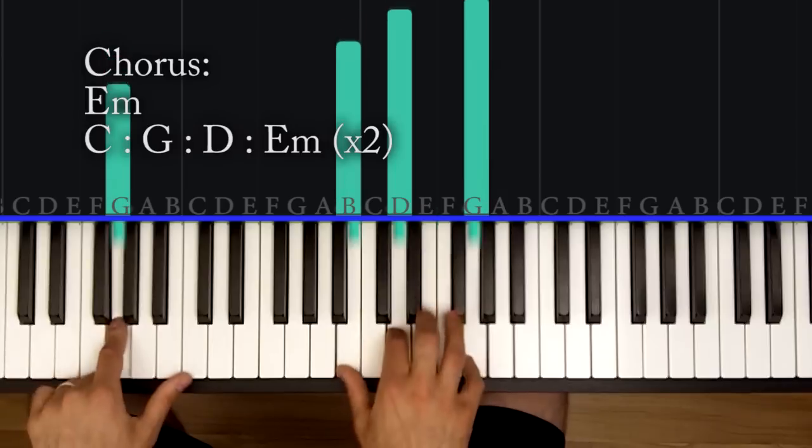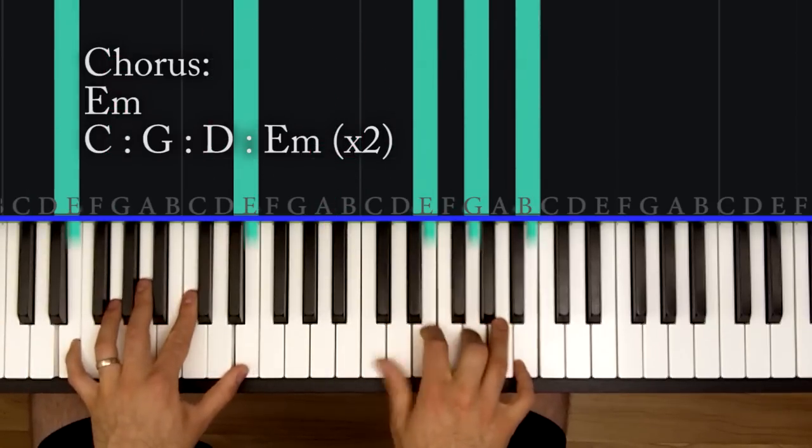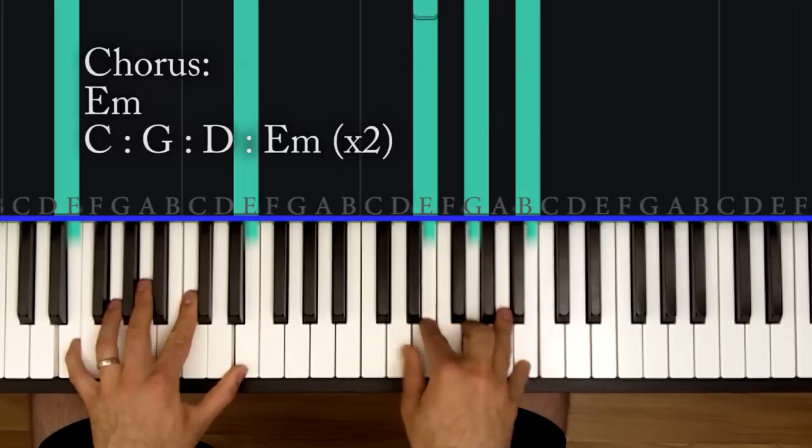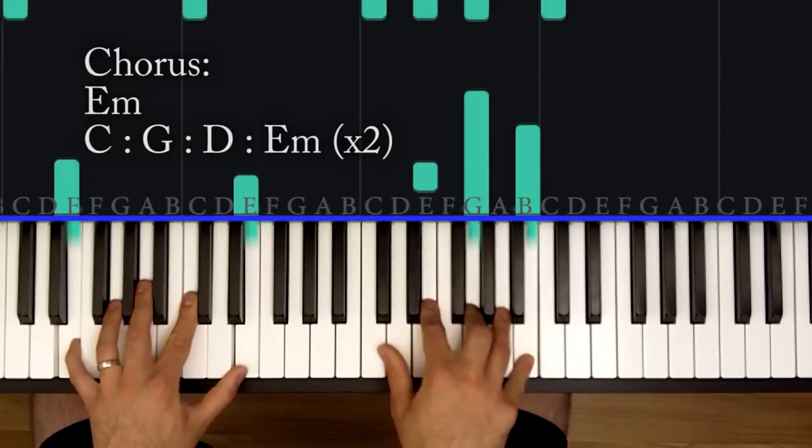So you've got this after that E minor, you go into the second part of the chorus which is a C, G, D, E minor. Now this is just like the pre-chorus, the first half. The only difference is in the chorus when you get to that part you play that section straight through twice. You don't end on the D.